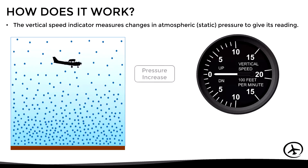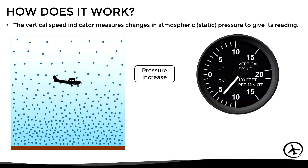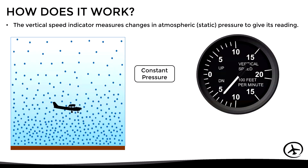Conversely, if the aircraft starts descending, the static pressure will gradually increase, so the instrument will interpret this as an altitude decrease, indicating the corresponding descent rate. And once again, when the aircraft levels off, the pressure will remain constant and the VSI will return to zero feet per minute.